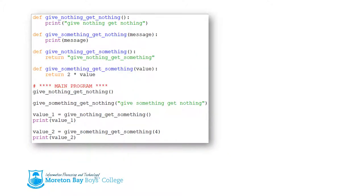Here is what it looks like in an actual program. Functions can be identified because they all start with the def keyword — def stands for define. This is the function name, and inside the brackets is where you pass information from the main program into the function. When you see the return keyword, that's where the function returns information back to the main program.